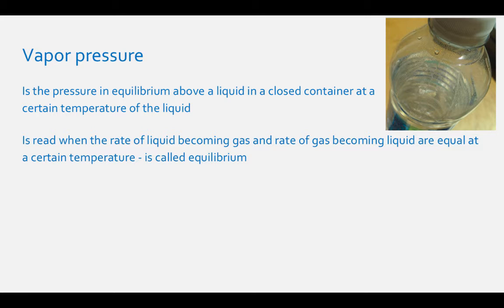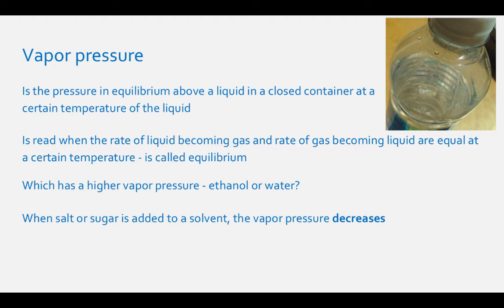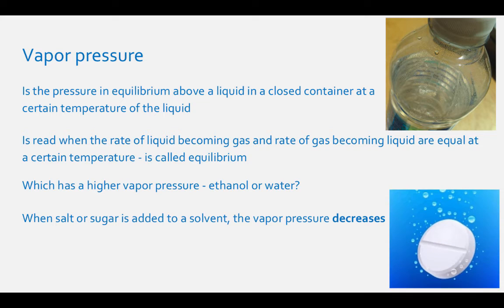Which has a higher vapor pressure, ethanol or water? Another way to think about this is which liquid will produce the most condensation above the liquid at the same temperature and surface area? We will answer this in the next video. But when a non-volatile solute is added to a solution, the vapor pressure decreases. Non-volatile means not able to be vaporized, so a non-volatile solute is something like salt or sugar. The vapor pressure decreases because the non-volatile solute particles get in the way of the solvent particles being vaporized into the gaseous phase.